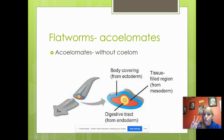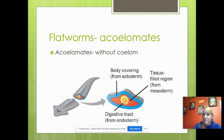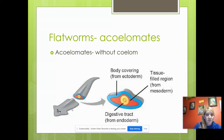Because they have three germ layers and they're the simplest animals with three germ layers, their body plan is acoelomate — meaning there's no coelom, no space between the mesoderm. The ectoderm is the outer layer, the endoderm is the inner layer that lines the digestive tract, and the mesoderm is in between. This example here is a planaria, a free-living flatworm that lives at the bottom of lakes.